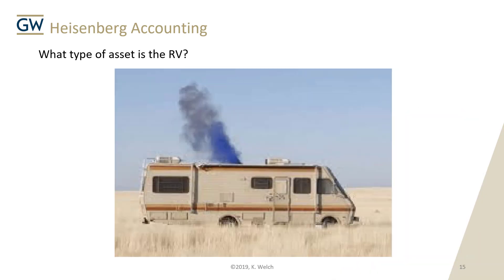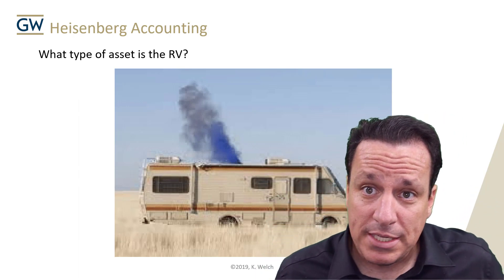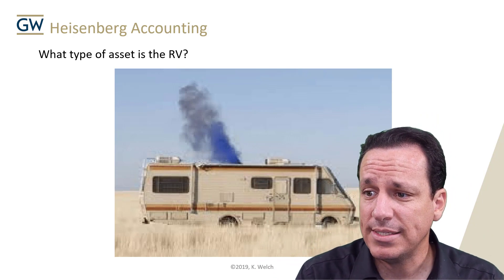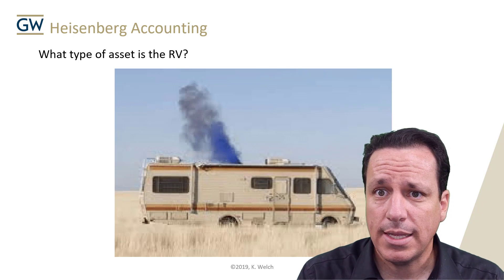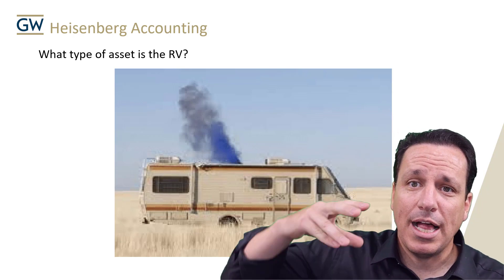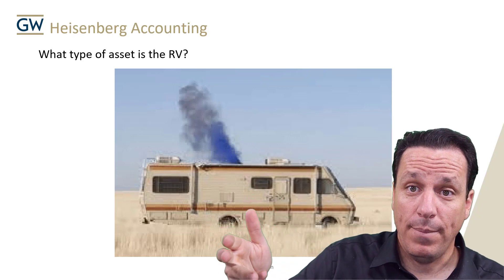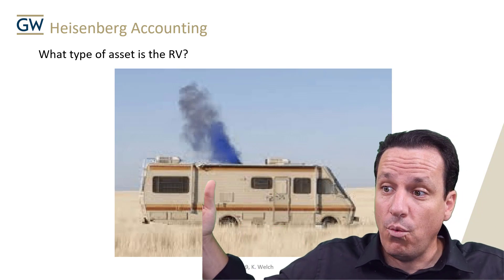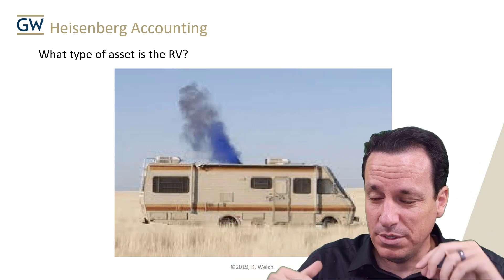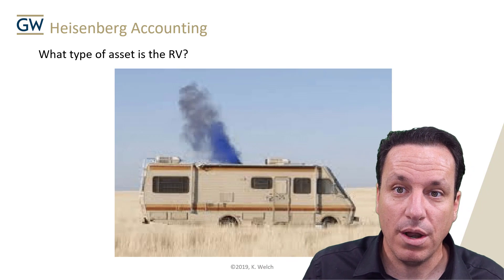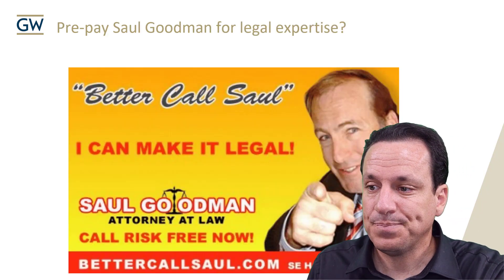What type of asset is the RV? One person once said 'land,' but that's the wrong answer. The RV is equipment. That's where they manufacture their meth — they drive out to the middle of nowhere. The RV is the factory where they create the product, so the RV is the equipment asset.